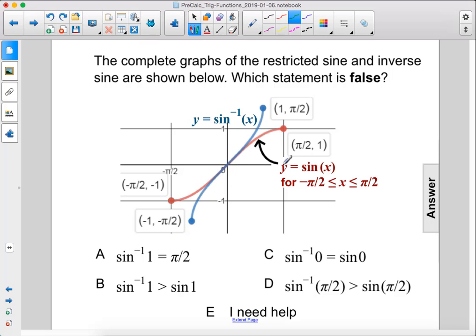Alright, so 1 is right here, so the arc sine of 1 is pi over 2. This is true.